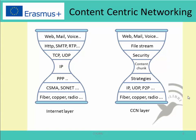The content becomes the universal agreement between every network element. It is decoupled from the host, and therefore in CCN the source of desired content is no longer relevant. Furthermore, the security and the strategy layers are introduced on top and below of the content chunk layer. The security layer is to secure the data, while the strategy layer describes how the content is distributed. This introduced layer can be on top of the IP layer, but it can also be implemented directly on top of the data link layer.